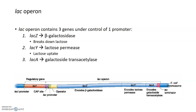Most operons contain genes that work within the same processes. In the case of the lac, or lactose, operon, there are three genes under the control of one promoter, which you can see down here in green. As the name suggests, all of these genes have something to do with the metabolism of lactose, which is the milk sugar. The three genes in the lac operon are lac Z, lac Y, and lac A, and each one of these genes encodes a different enzyme.